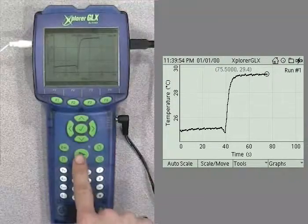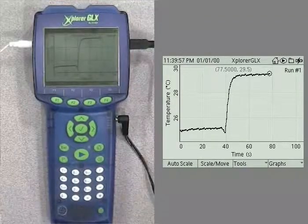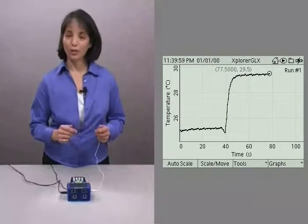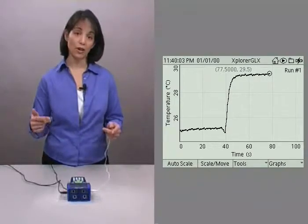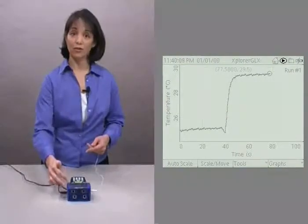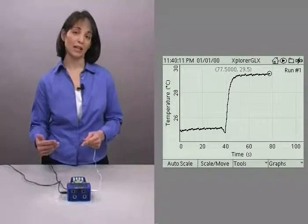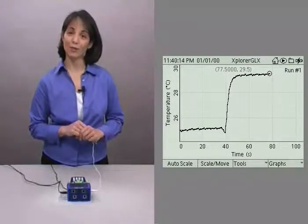Let's go ahead and push the start-stop button again to end data collection. You have just collected your first run of data. Notice on the top bar that our clock has changed back to a picture of the start-stop button indicating that the Explorer GLX is now ready for you to collect another run of data.